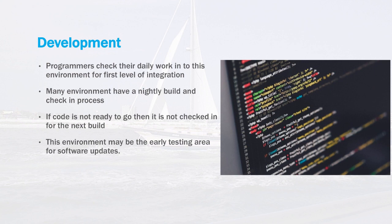The first layer is development, where programmers check their daily work in — it's the first level of integration in the process. Many environments have a nightly build and check-in process so that freshly checked-in code gets built overnight, unit tests may run against it, and it's ready to go the next morning. If code isn't ready, programmers simply don't check it in. This environment is also a good early testing area for operating system updates and major patch levels, where the development staff can quickly catch potential problems.